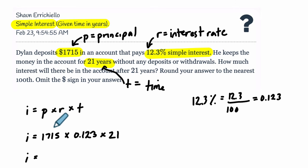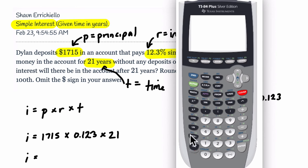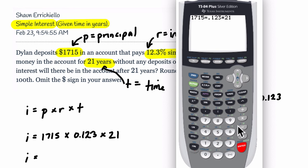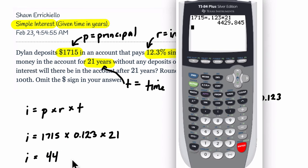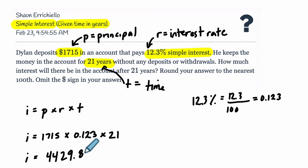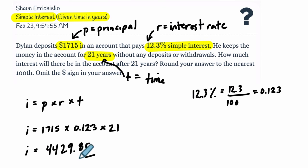I'll pull up my calculator and do 1715 times 0.123 times 21, and I get 4429.845. Rounding to the nearest hundredth, it's going to be 4429.85. And that is just the interest on the principal over those 21 years.